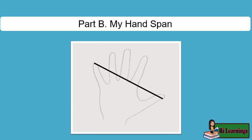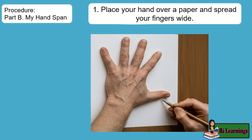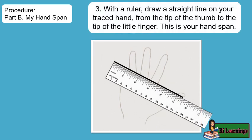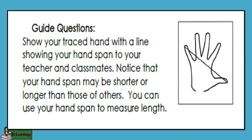Part B: My Hand Span. Step 1: Place your hand over a paper and spread your fingers wide. Step 2: With a pencil, trace your open hand on the paper. Step 3: With a ruler, draw a straight line on your traced hand, from the tip of the thumb to the tip of the little finger. This is your hand span. Show your traced hand with the line showing your hand span to your teacher and classmates. Notice that your hand span may be shorter or longer than those of others. You can use your hand span to measure length.